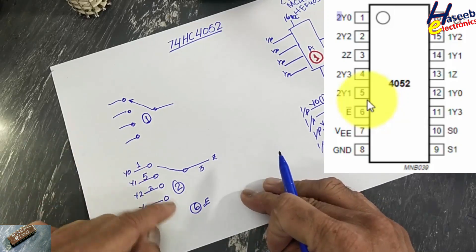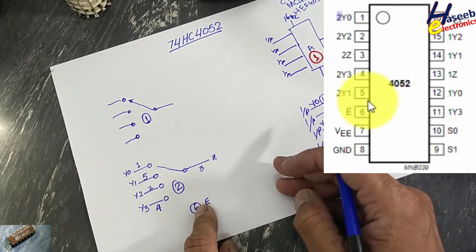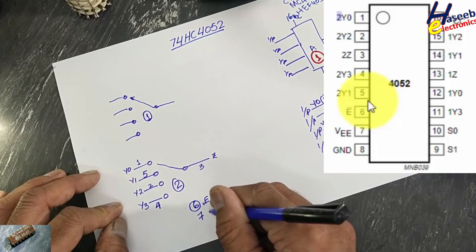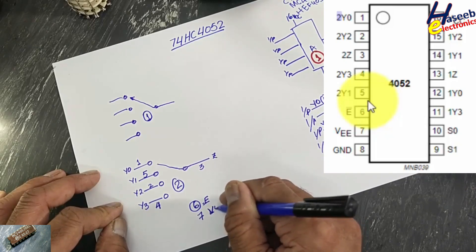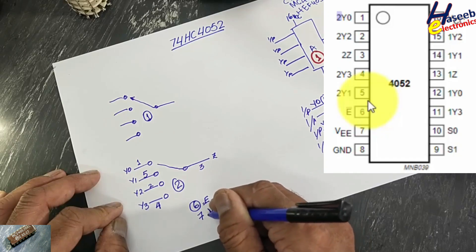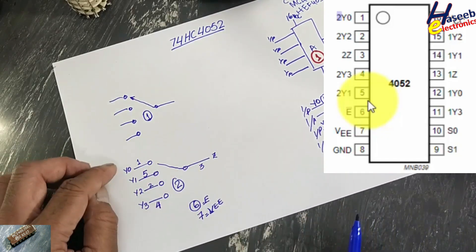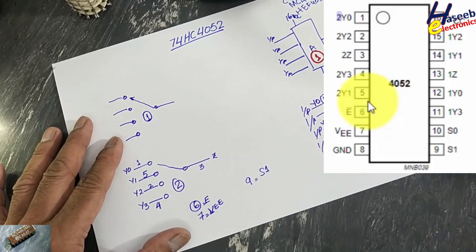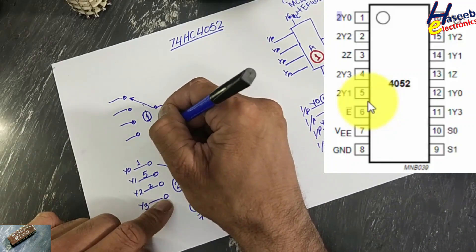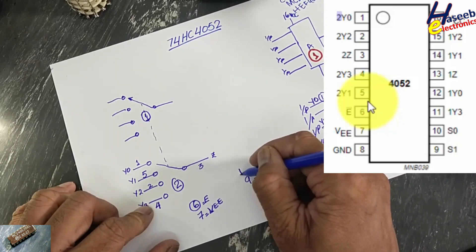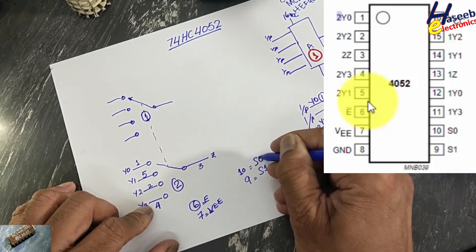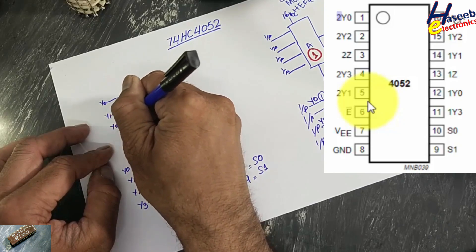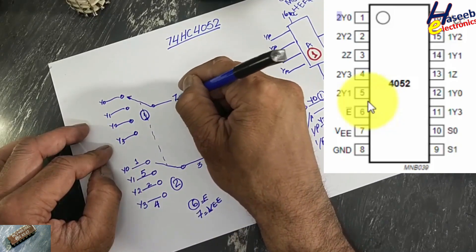The enable pin is common for both sections. When this pin is connected to ground, the IC will start functioning. Pin number 7 is VEE — that is the signal ground. Pin number 8 is digital ground. Pin number 9 is S1 (Select 1) and pin number 10 is S0. These two binary inputs select the position — Y0, Y1, Y2, Y3 — and Z is the output: Z1 and Z2.